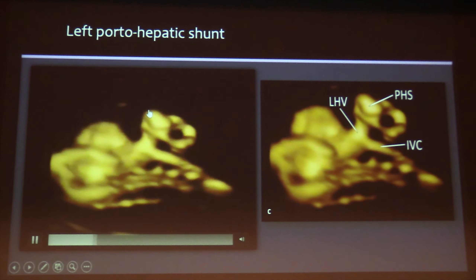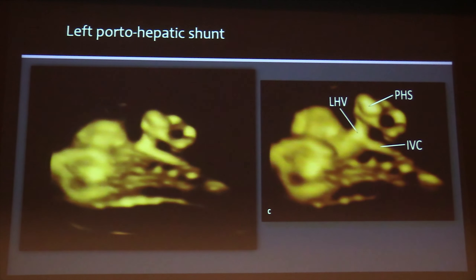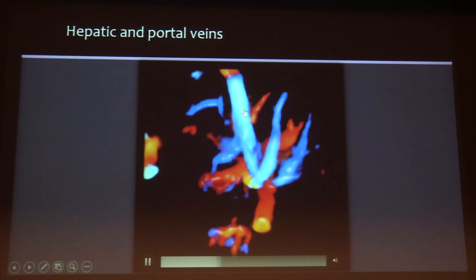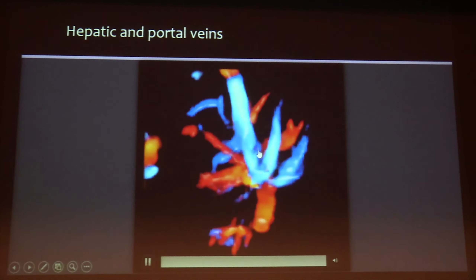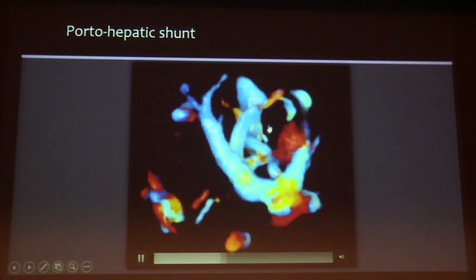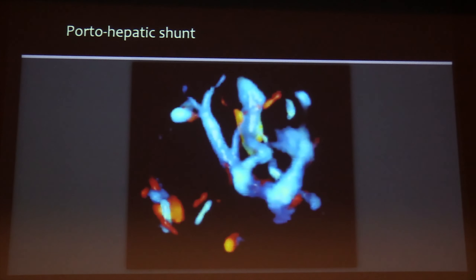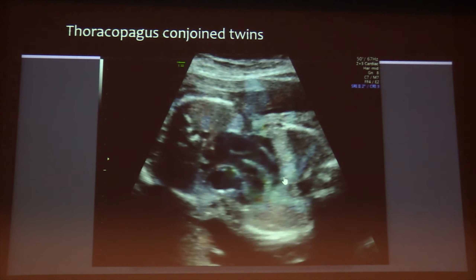For most hepatic shunts, both intra-hepatic and extra-hepatic, you can use HDPD or B-flow. The B-flow still has a place because it is very sensitive to low flow. You can see the portal vein, the hepatic vein trident, the umbilical vein, and the aorta — the whole system. This is a case of a porto-hepatic shunt: you can see the trident and an extra vessel — a shunt between the portal and hepatic system. 3D and 4D make it much clearer, and you can see not only one but two shunts from the portal system into the hepatic system.